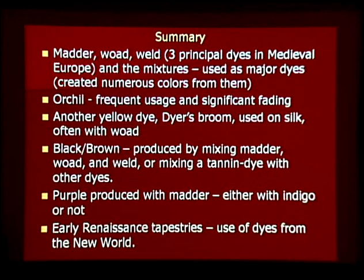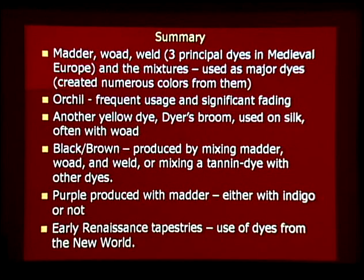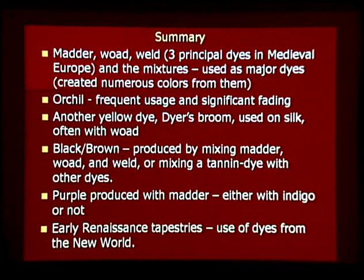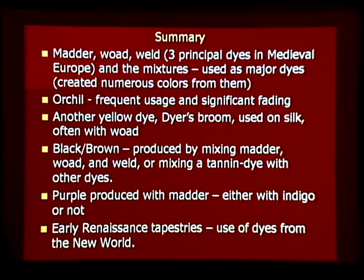In summary, as other publications and recent analysis have shown, the three principal dyes were the major dyes used on these tapestries. Numerous colors were created from using only those three dyes. Usage of orchil was frequent, but the color faded most distinctively. Dyer's broom was often seen on silk yarns. Black and brown were produced by mixing many dyes, and a hydrolyzable tannin dye also seems to have been added at times. When purple was produced with madder, it was sometimes produced with woad, but at other times with madder alone. On tapestries from the early Renaissance period, dyes from the New World began to be used.